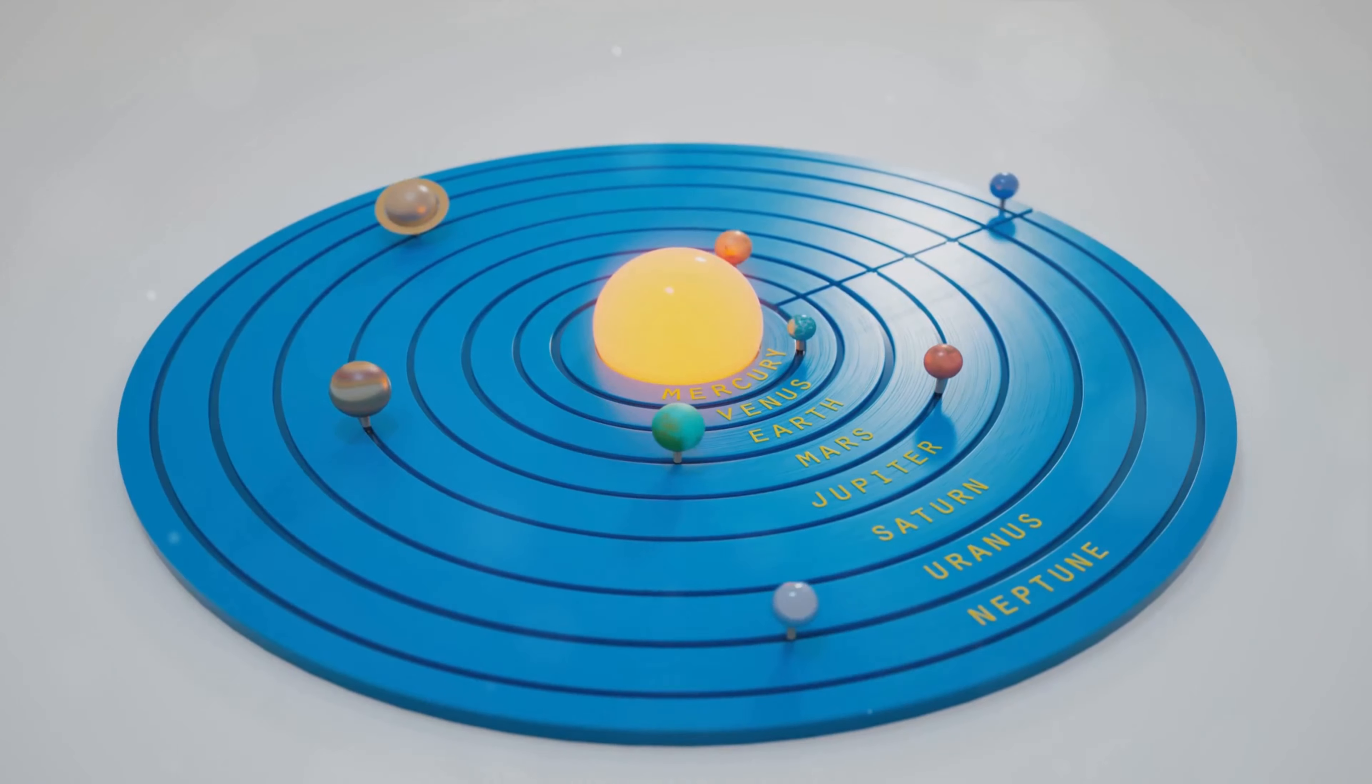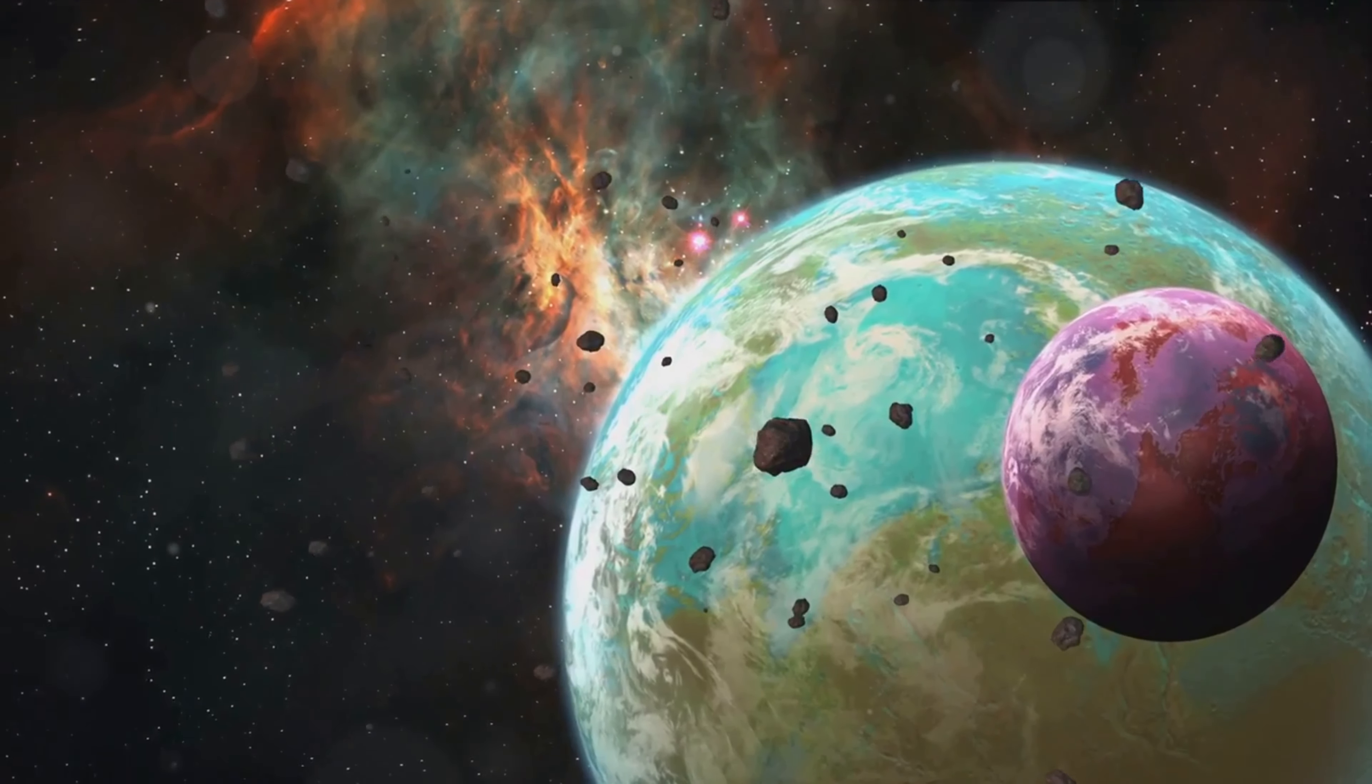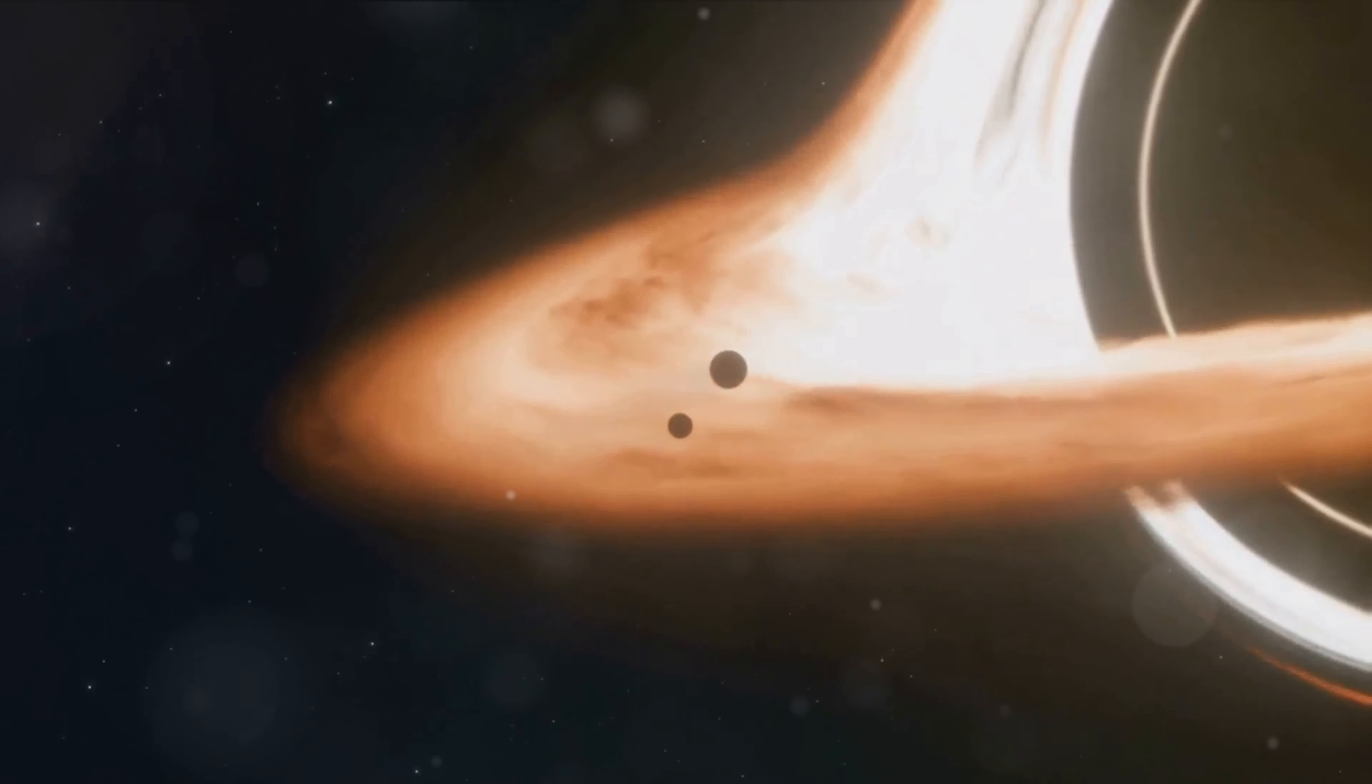With Pluto's demotion, the solar system was left with eight planets, but peculiar orbits and clustering in the Kuiper Belt hinted that another planet might be influencing these distant objects.